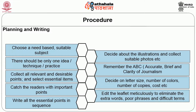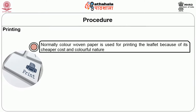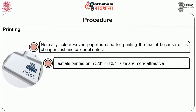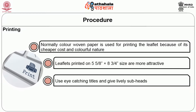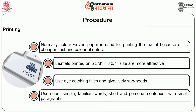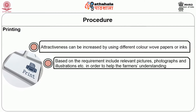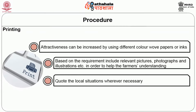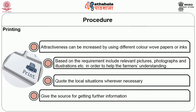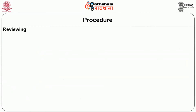For the printing part of leaflets, colored woven paper is normally used because of its cheaper cost and colorful nature. Leaflets are printed in 5 by 8 inches or 3 by 4 inches sizes, which are more attractive. Use eye-catching titles and lively subheads, short simple familiar words, and short personal sentences with small paragraphs. Attractiveness can be increased by using different colored papers or inks. Include relevant pictures, photographs, and illustrations to help farmers' understanding, quote local situations wherever necessary, give the source for getting further information, and review the leaflet at a later time for improvement.